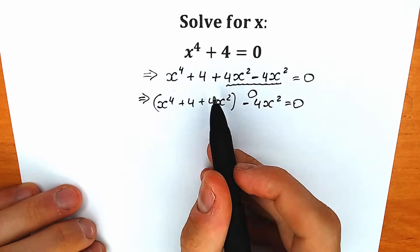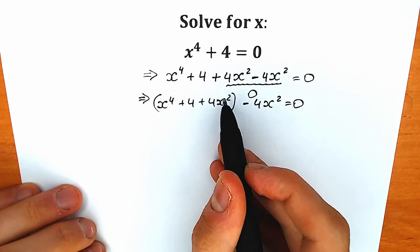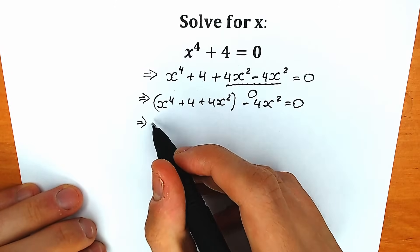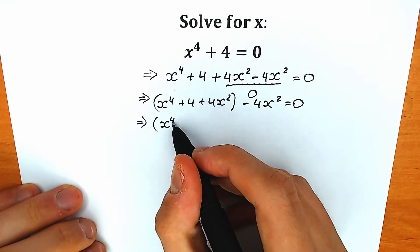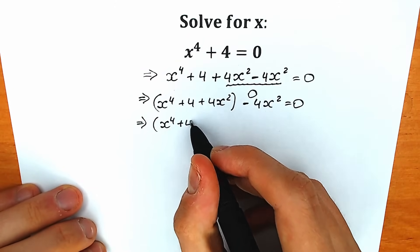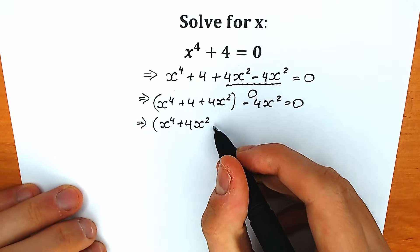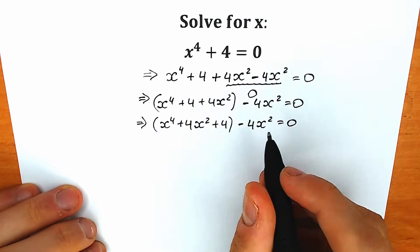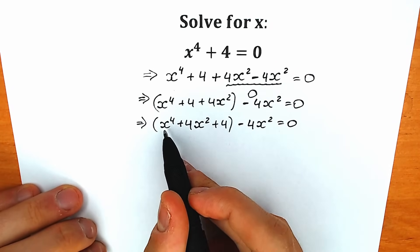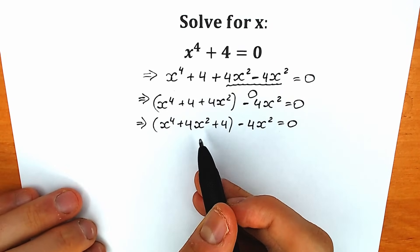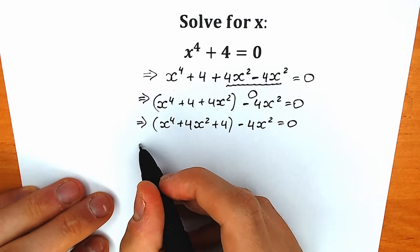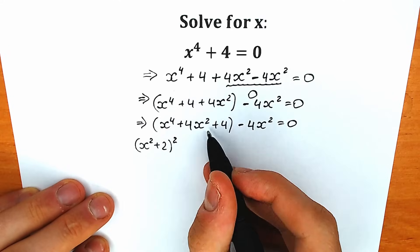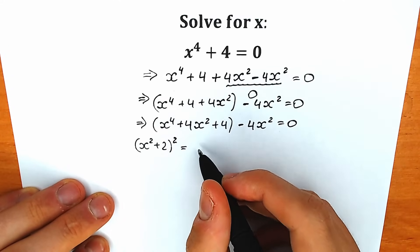Why did I group it? Let's look closely at our parentheses. If we change the element positions — this one to the second position, this one to the third position — we will have one really interesting formula. So we will have x to the fourth power, then plus 4x squared, then plus 4. And minus 4x squared.